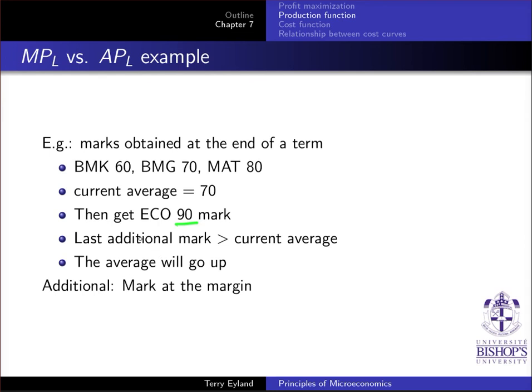Well, what would happen if your marginal, your last grade that you obtain, you're obtaining an extra one, and that last grade is a grade of 90 in economics? Well, what will happen? That last additional mark is greater than your current average, therefore it must be bringing up your average. It's the same thing with marginal and average productivity. If that last worker you hire is more productive on his own, has a higher productivity per person than the current average in the past, it's going to bring up the average.